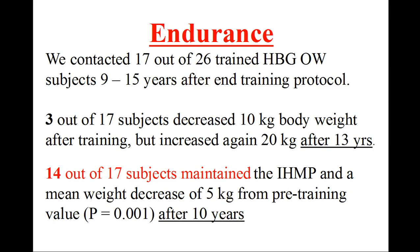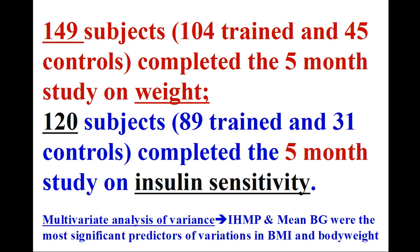Endurance: we contacted 17 out of 26 trained HBG overweight subjects, 9–15 years after the end of training protocol. Three out of 17 subjects decreased 10 kg body weight after training but increased again 20 kg after 13 years. Fourteen out of 17 subjects maintained the IHMP and a mean weight decrease of 5 kg from pre-training value after 10 years. We studied IHMP in 149 subjects (104 trained and 45 controls) who completed the 5-month study on weight, and in 120 subjects who completed the 5-month study on insulin sensitivity by oral glucose tolerance tests.